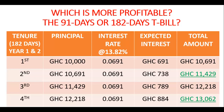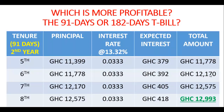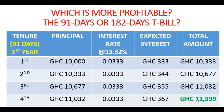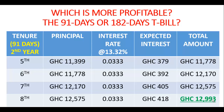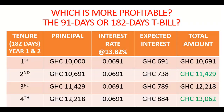Let's compare: after the first year, the 182-day tenure yields 11,429 while the 91-day tenure yields 11,399. So the 182-day tenure is already performing better in year one. Looking at year two: the 91-day tenure yields 12,993, but the 182-day tenure yields 13,062 by the end of the fourth period — still higher than the 91-day result. Tentatively, the 182-day T-bill is more profitable than the 91-day T-bill.